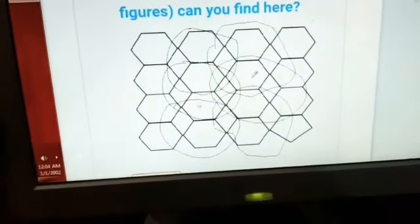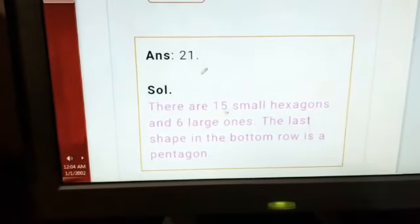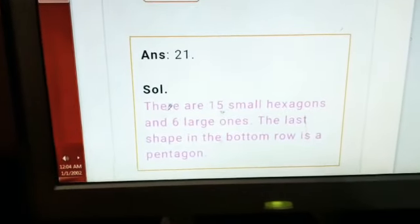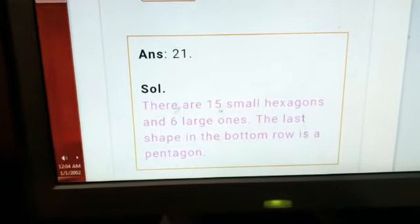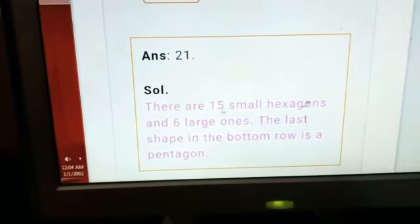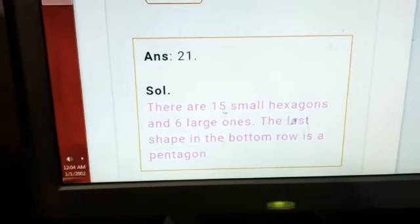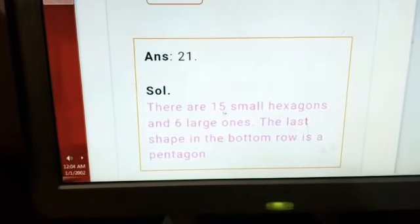Fifteen plus six equals twenty-one. Here our answer is twenty-one. Solution: there are fifteen small hexagons and six large ones. The last shape in the bottom row is a pentagon.